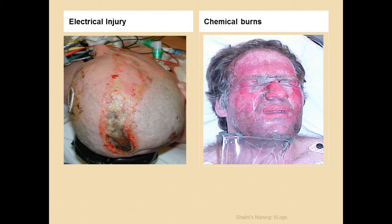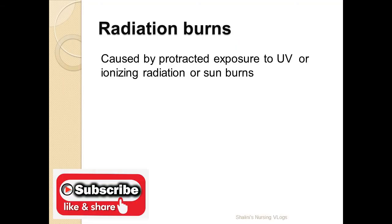Chemical burns occur when the victim comes in contact with any kind of strong acid or strong base, leading to an injury. Radiation burns are caused by exposure to ultraviolet rays or ionizing radiation — in layman's terms, what we call sunburns.